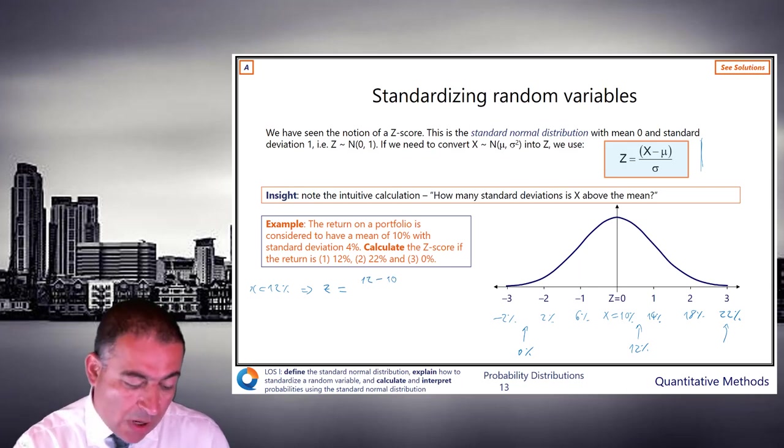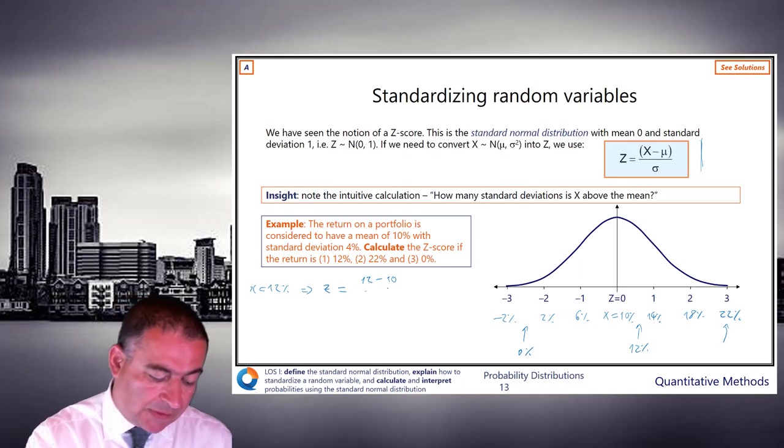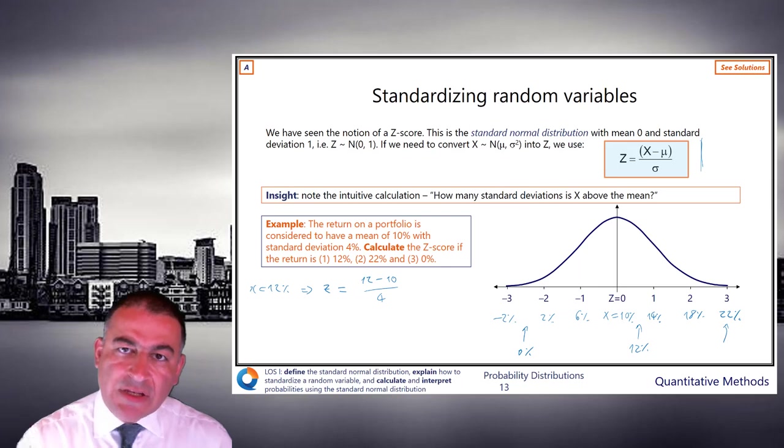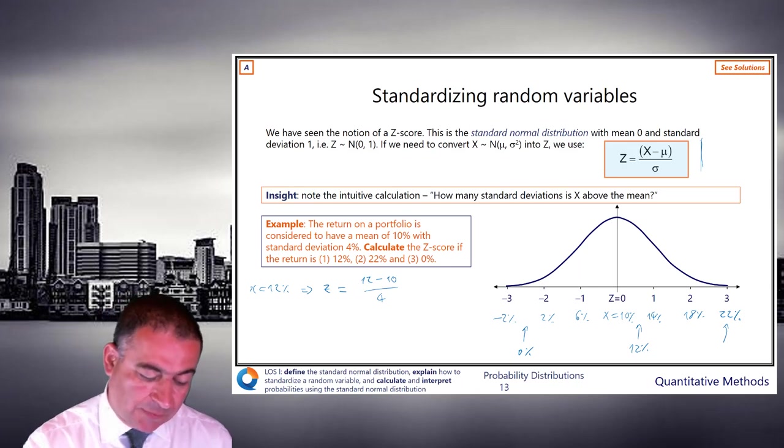Well, we are 12 minus 10. We are 2 above the mean. And how big is that in terms of standard deviations? So if a standard deviation is 4, then 2 percentage points is half a standard deviation. And so that equals 0.5.